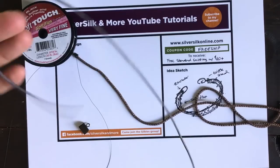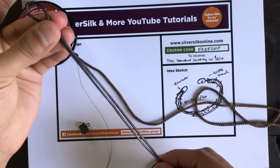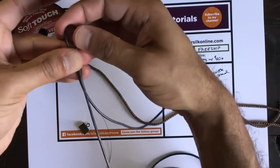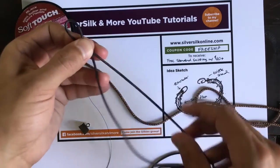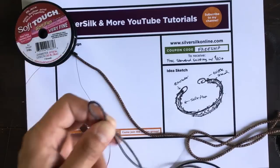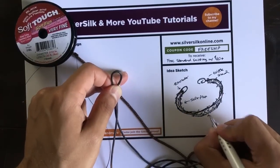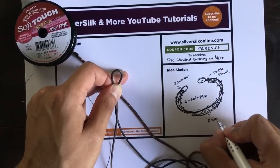As far as the leather cord goes, I just got this from Etsy, but Leather Cord USA, Jesse James Beads - you can pretty much source this anywhere. Size-wise, this is the two millimeter. This is two millimeter round leather cord.